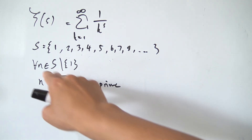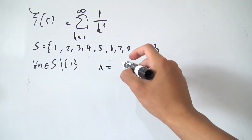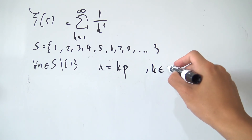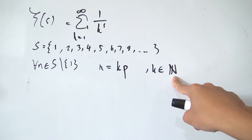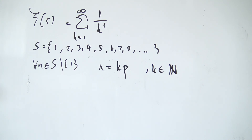If we consider all n in our set S (not including 1), we can express n as some multiple of a prime number. Our multiple k is also an element of the natural numbers. So as long as k is in the natural numbers, we can express any n in our set as a multiple of a prime. The reason why this is important will become more clear later on. What we're going to do now is use multiples of primes to filter out all the natural numbers.